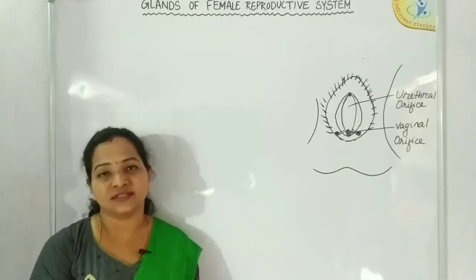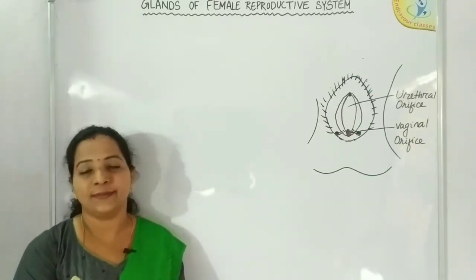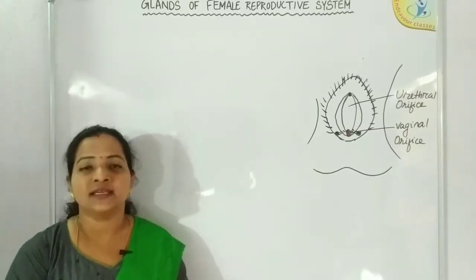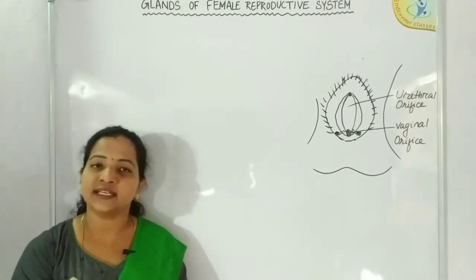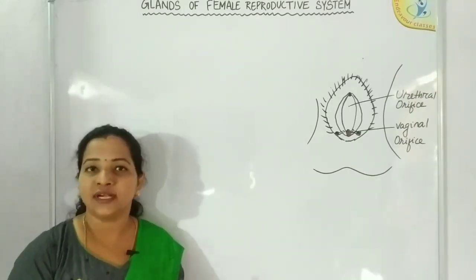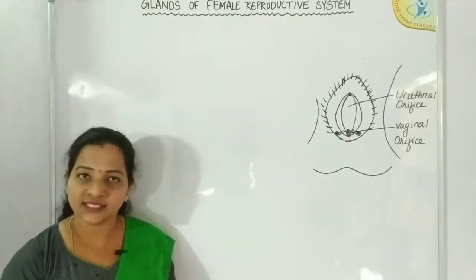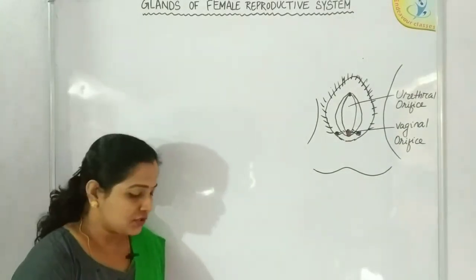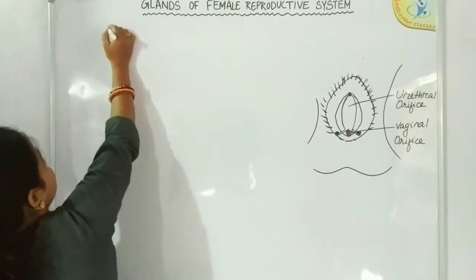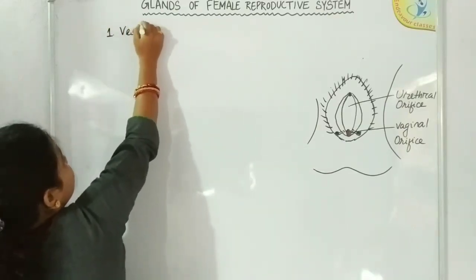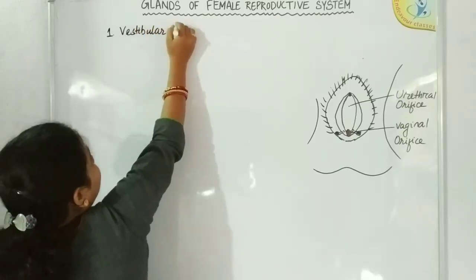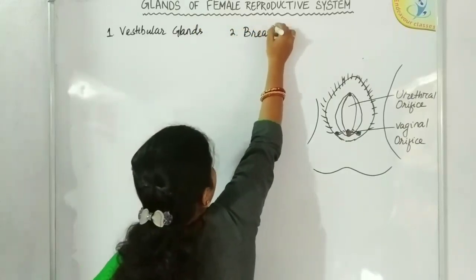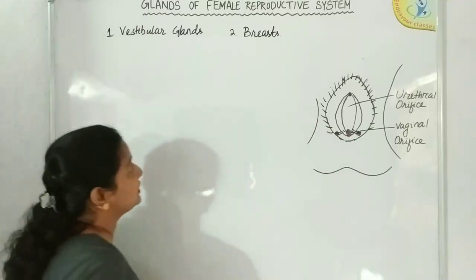Hello students, we are going to discuss here the glands of female reproductive system. As we all know, the female reproductive system comprises some external genital organs, some internal genital organs, and certain glands. We have already discussed the internal genitalia and external genitalia. Now we will continue with the glands of female reproductive system, which include the vestibular glands and the breasts. We will only discuss the vestibular glands here; breasts will be studied later.